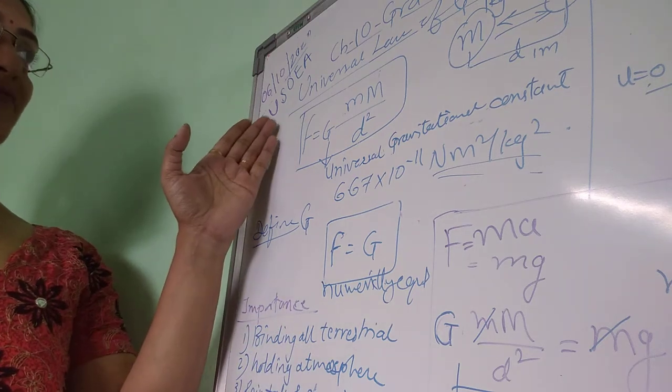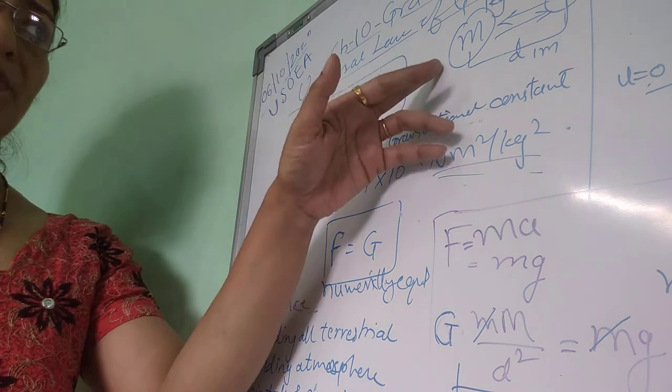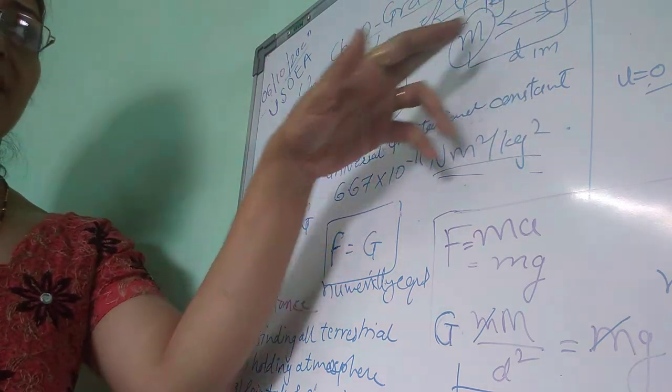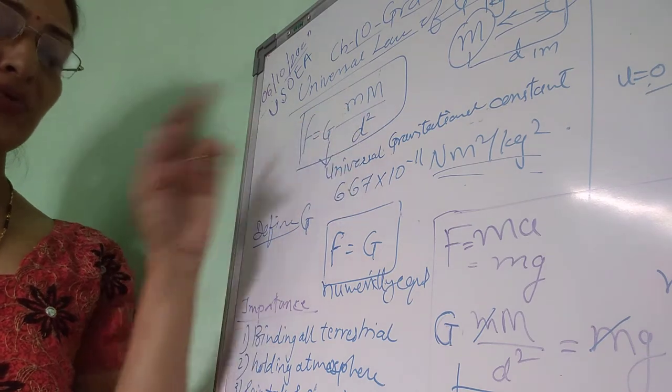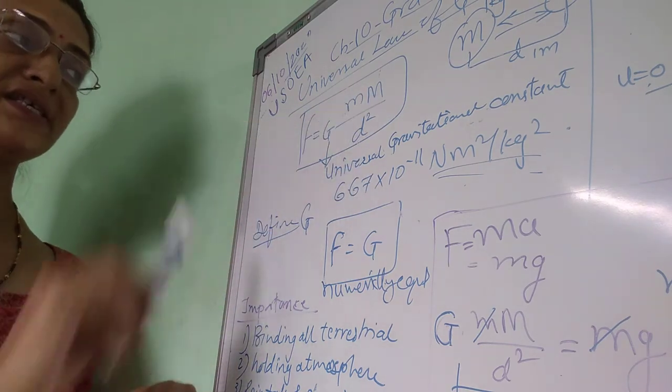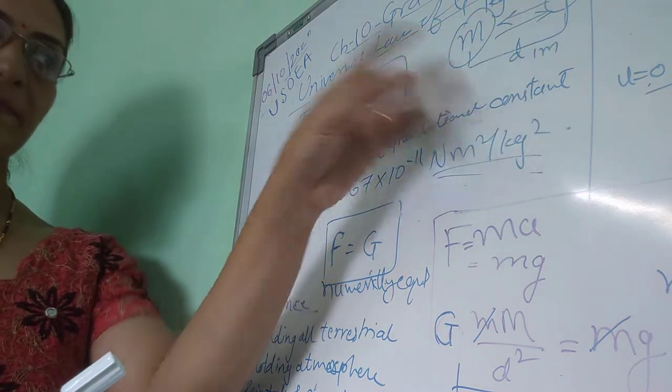Dear student, already last time we have seen the universal law of gravitation, according to which every object in the universe attracts another object with a force which is directly proportional to the product of their masses and inversely proportional to the square of the distance between them.